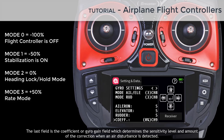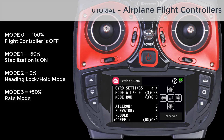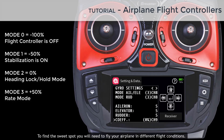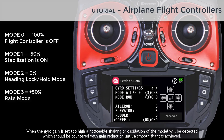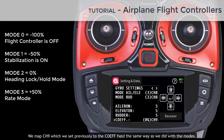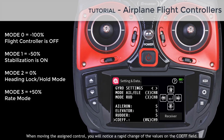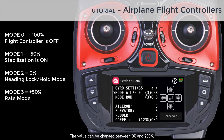The last field is the coefficient or gyro gain field, which determines the sensitivity level and amount of correction when an air disturbance is detected. It affects the aileron, elevator, and rudder equally and should be used to fine-tune the gyro settings during flight. To find the sweet spot, fly your airplane in different conditions. When the gyro gain is set too high, a noticeable shaking or oscillation will occur — reduce gain until a smooth flight is achieved. We map channel 9 to the coefficient field the same way as the modes. The value can be changed between 0% and 200%; start with 100% during flight.